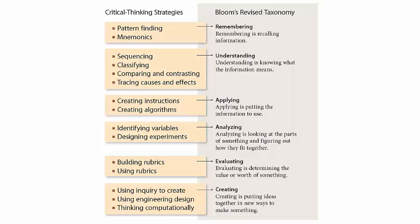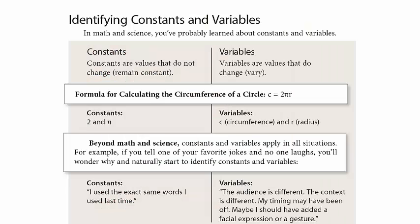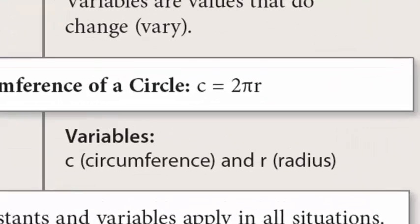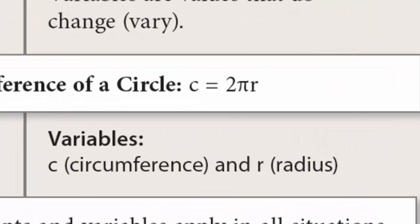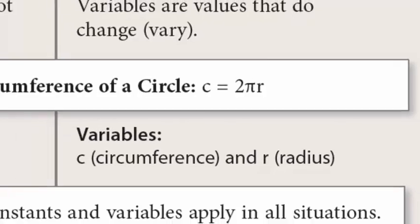Let's look at identifying variables. Math has taught us what constants and variables are. Constants are values that do not change, and variables are values that do change. For example, in the formula c equals 2 pi r, c and r are variables, and 2 and pi are constants.